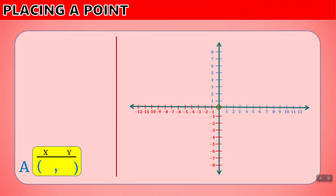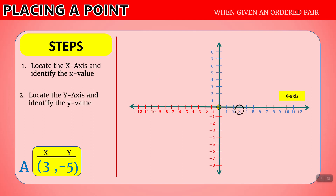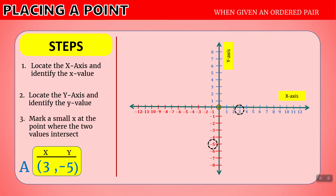What happens when we are given an ordered pair and we want to find out where to place the point on the graph? When we are given an ordered pair like three comma minus five, where is that point? The first step is to locate the x-axis and identify the x-value. Here's the x-axis and the x-value is three — here it is on the positive side. Step two, locate the y-axis and identify the y-value. The y-value is minus five — here it is. Step three, mark a small x at the point where the two values intersect. If we go to three and draw a line, and go to minus five on the y-axis and draw a line, we can see where they intersect right here. That is point A located at three comma minus five.